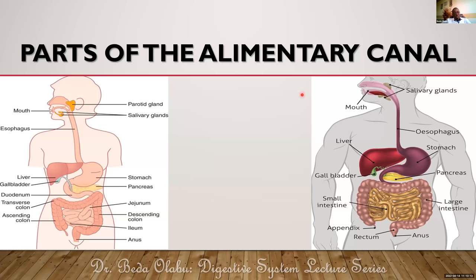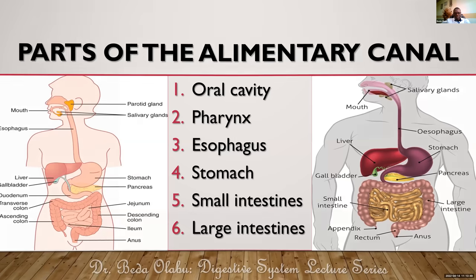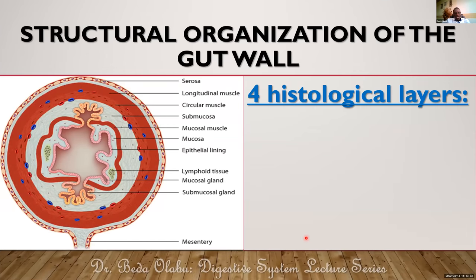The alimentary canal goes from the oral cavity through the pharynx, esophagus, stomach, small intestine, and large intestine. In this lecture, we'll focus on the basic concepts needed for understanding development of the gut. The second part will cover development and malformations of specific organs from the oral cavity all the way to the large intestines.